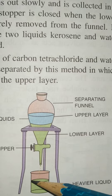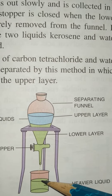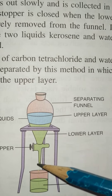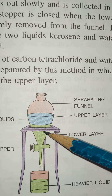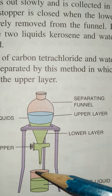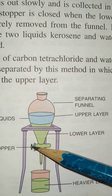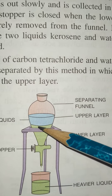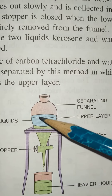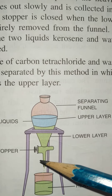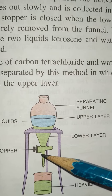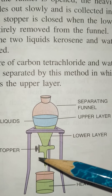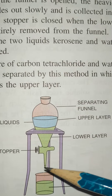We collect the water in a vessel below. Once the water from the lower layer has come out completely, we close the stopper. Only kerosene oil remains in the funnel. This is how we separate both liquids — it is a suitable technique to separate two immiscible liquids.